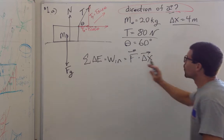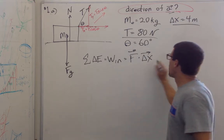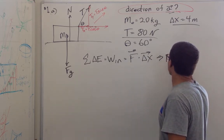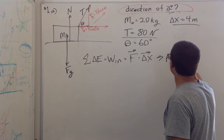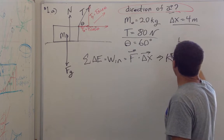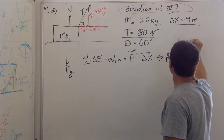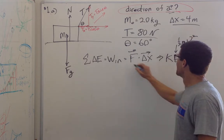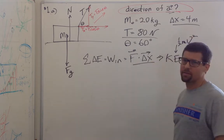Where does that energy go? We know that energy goes to kinetic energy, and kinetic energy is one half mv squared. This is what we want, this is what we have.